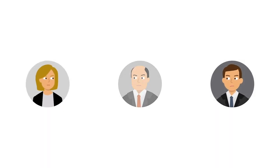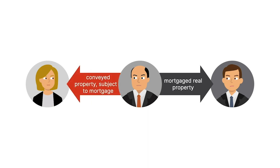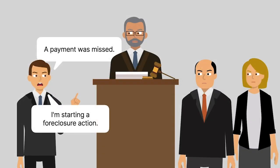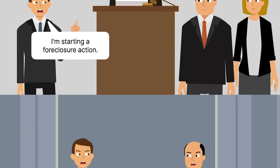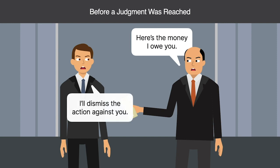William Garland mortgaged his real property to Grover Garland. William then conveyed the property, subject to the mortgage, to Marcella Vincent. When a payment was later missed on the mortgage, Grover started a foreclosure action against William and Vincent. Before a judgment was reached, William paid the money due on the mortgage to Grover, who then dismissed the action against William.